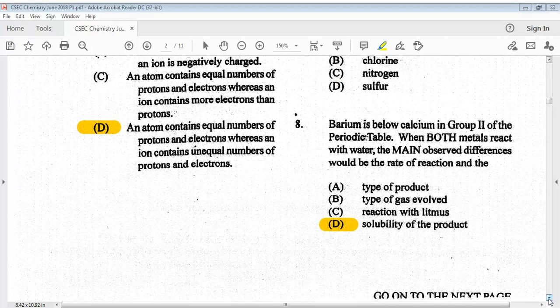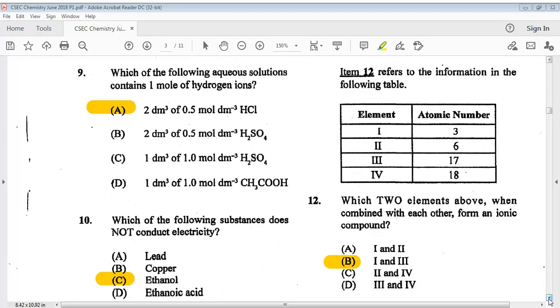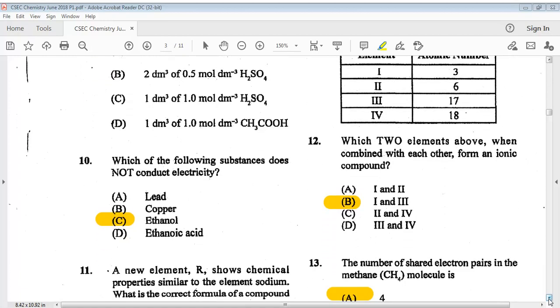Question eight: barium is below calcium in group 2 of the periodic table, when both metals react with water, the main observed differences would be the rate of reaction and the answer is D, solubility of the product. Let's go on to nine. The answer is A.